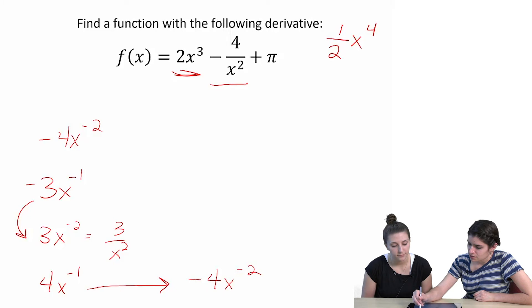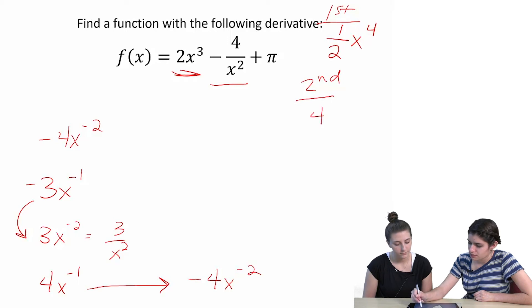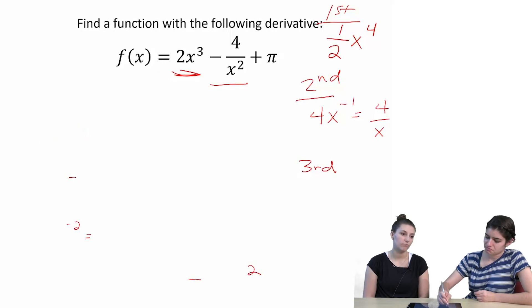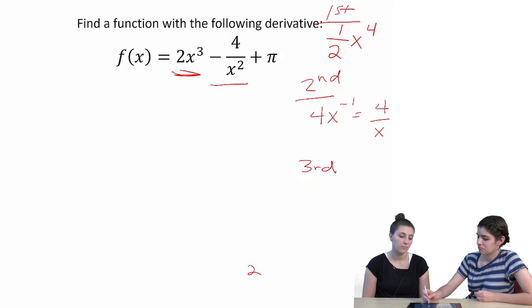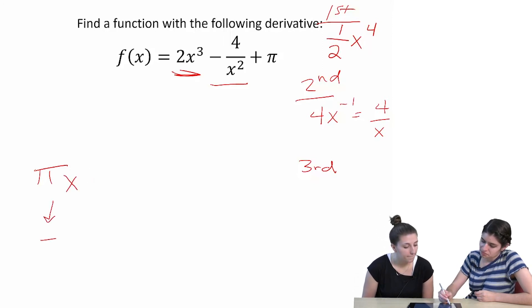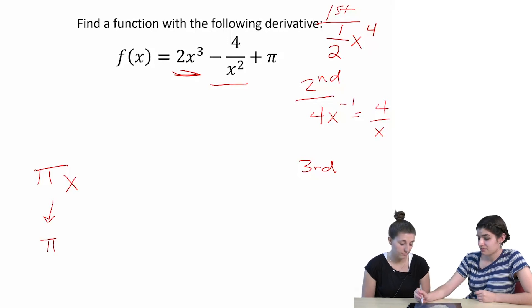So the next term is negative 4x to the negative first. Or is it just positive 4x? Oh yeah. Just 4x. So our first term is this one. The second term is 4x to the negative first, which is 4 over x. Should we just add a 1 to the exponent? Pop an x next to it? Yeah. Well that's what we were doing with the other ones, right?